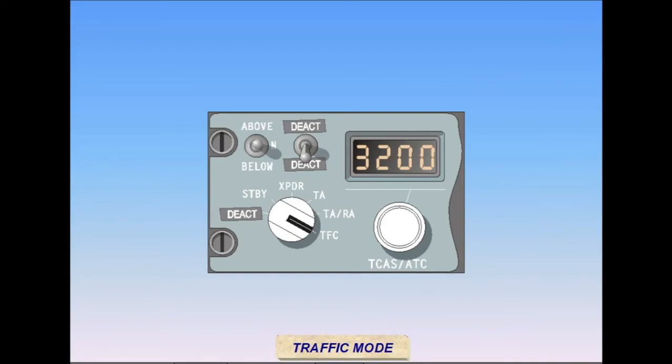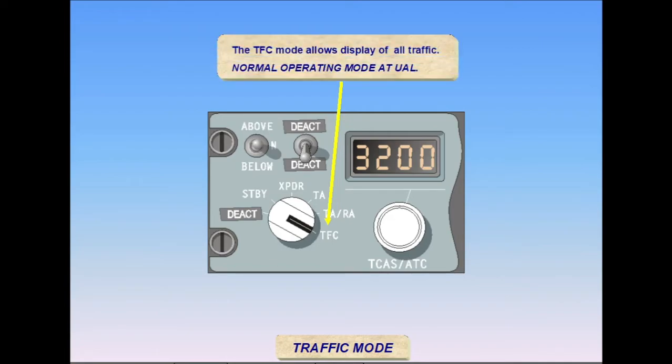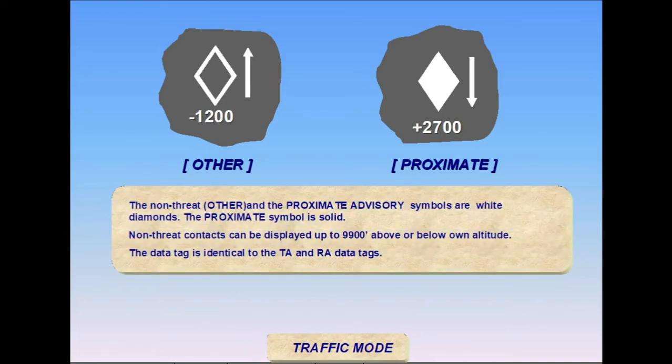The traffic mode allows the continuous display of non-threat traffic, as well as all TAs and RAs. This is the normal operating mode for United crews. Non-threat traffic is displayed as a white diamond with a data tag whenever the traffic mode is selected. Data tags are the same for non-threat traffic as for TA-RA symbols.